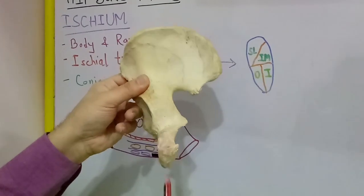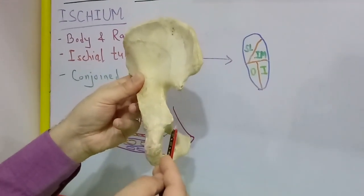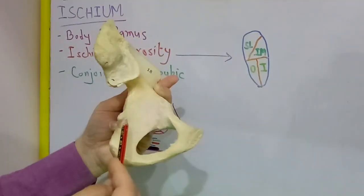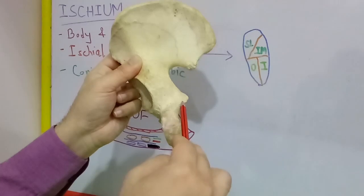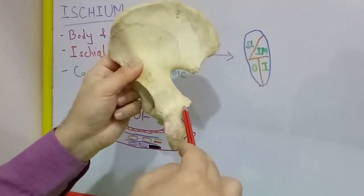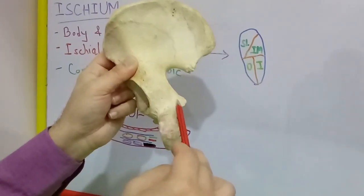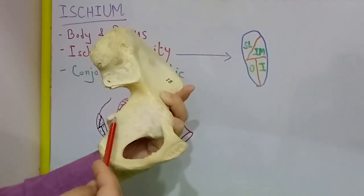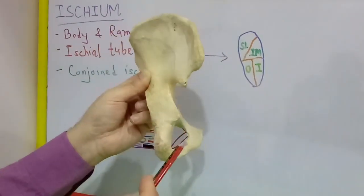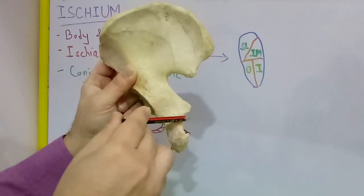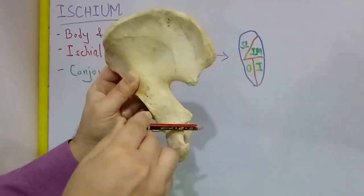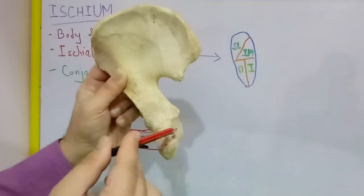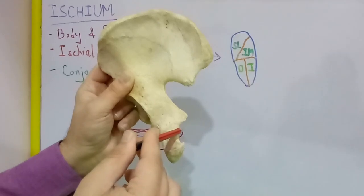Coming to the attachments on the ischium. First, the ischial spine gives attachment to the sacrospinous ligament along its margins. The dorsal surface of the ischial spine is crossed by the internal pudendal vessels and the pudendal nerve, whereas the pelvic surface of the ischial spine gives origin to the posterior fibers of the levator ani muscle. The lesser sciatic notch is occupied by the tendon of obturator internus muscle. The upper margin of the lesser sciatic notch gives origin to superior gemellus, and the lower margin gives origin to inferior gemellus muscle.